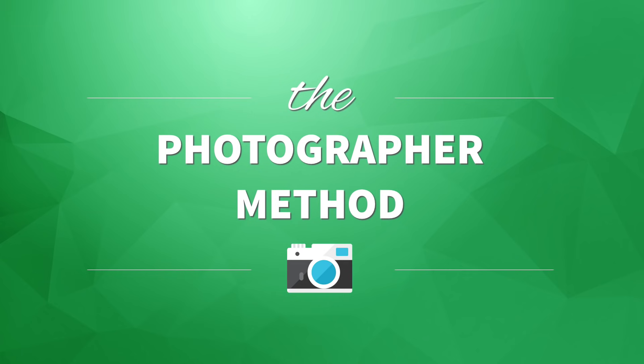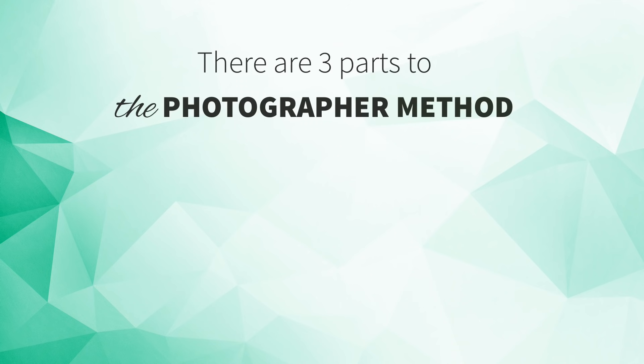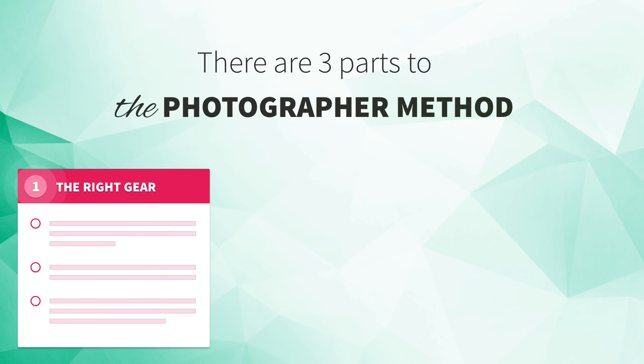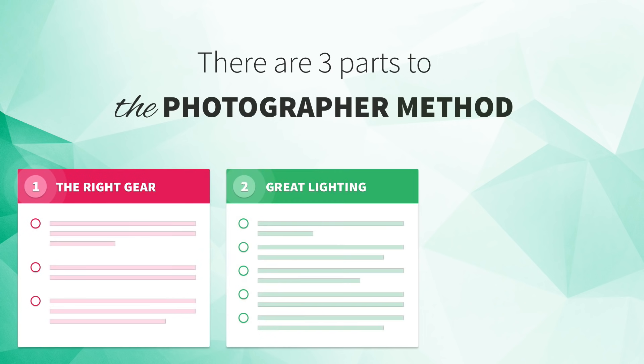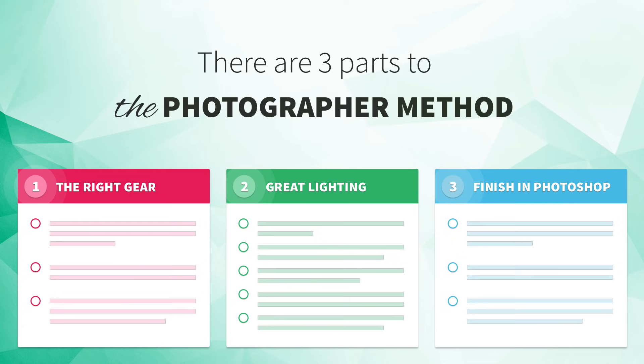Okay, so without further ado, let me show you how to use the photographer method. It all starts with shifting your mindset. Imagine you're a photographer and you've been hired to take a beautiful photograph of a room. There are three things that ultimately help you succeed: having the right gear for the job, setting up great lighting, and making adjustments to your final image in a program like Photoshop.